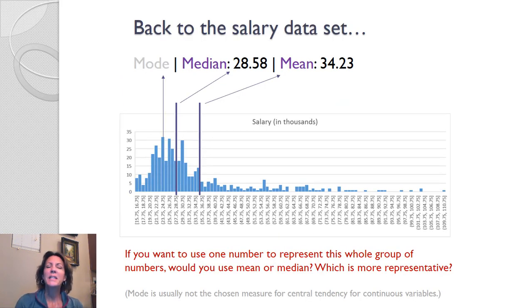So I'm going to take you back to the salary data set that we talked about in the first video. And there's a real reason why I introduced it back then. This is to show you when the median is actually the best measure of central tendency. Now, what kind of shape is this again? It's positively skewed.